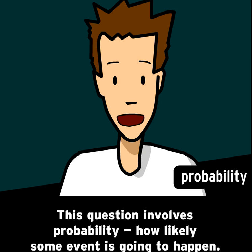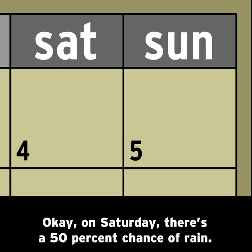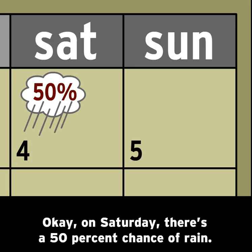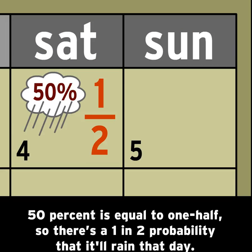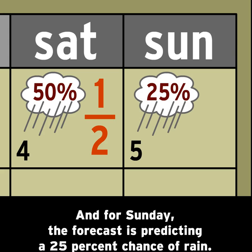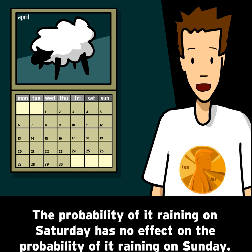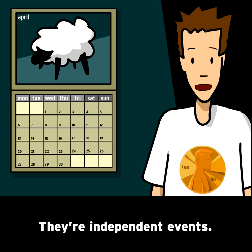This question involves probability — how likely some event is going to happen. In this case, you have two single events: the weather on Saturday and the weather on Sunday. On Saturday, there's a 50% chance of rain. 50% is equal to one-half, so there's a one-in-two probability that it'll rain that day. And for Sunday, the forecast is predicting a 25% chance of rain. 25% is the same as one-fourth, so that's a one-in-four chance of rain on Sunday. The probability of it raining on Saturday has no effect on the probability of it raining on Sunday — they're independent events.